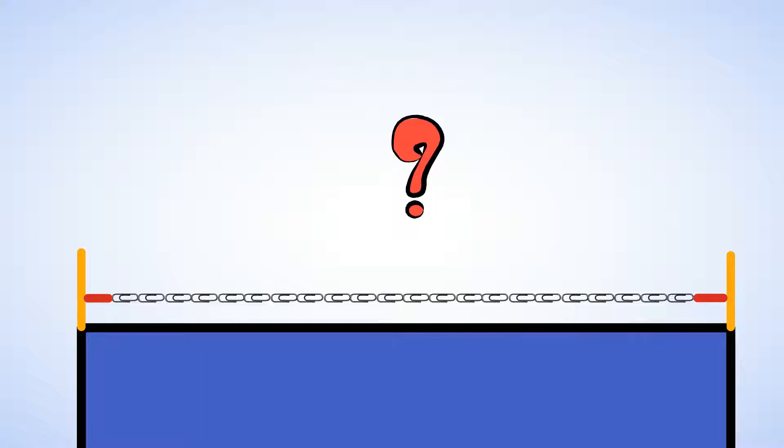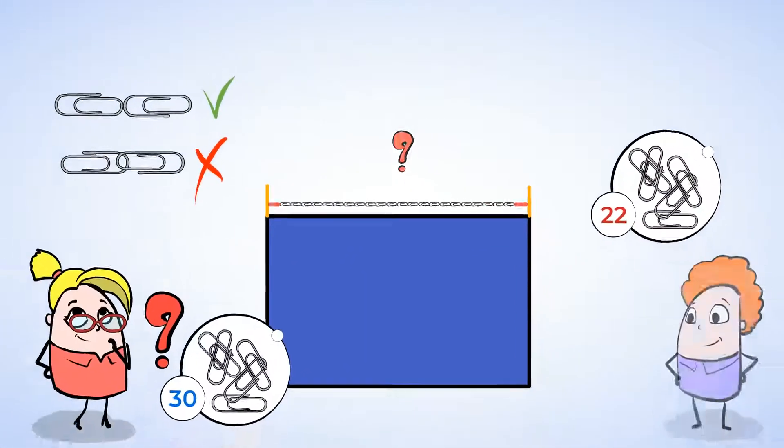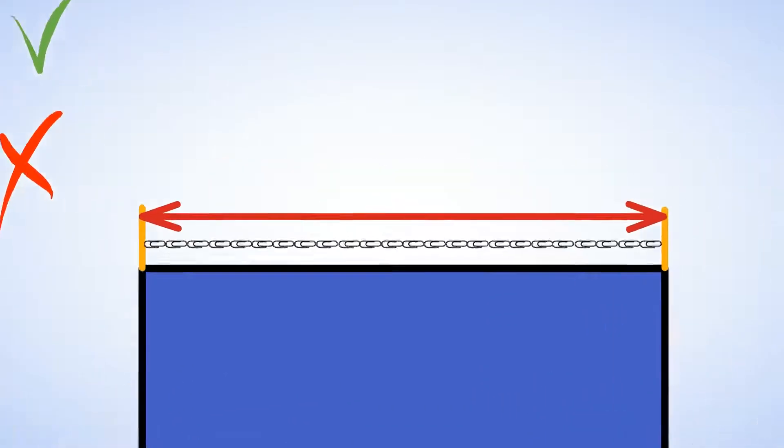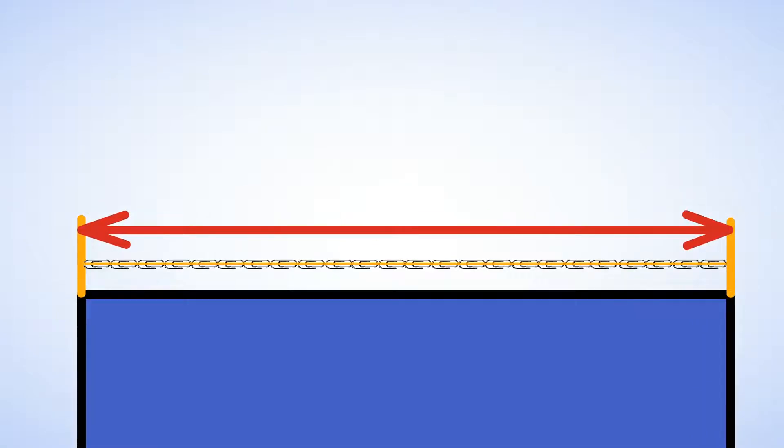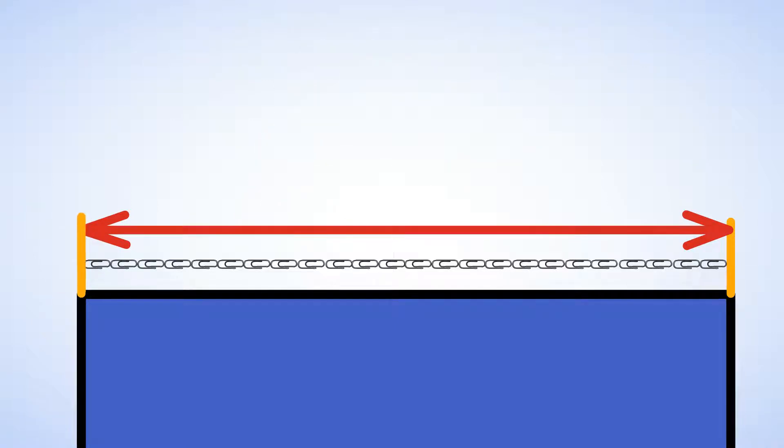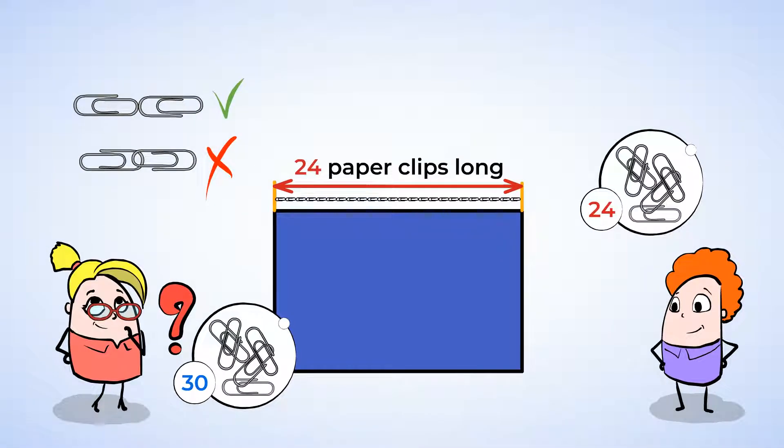Maybe he should try again and remember to measure from edge to edge. All right, let's see. It looks like he got it right this time, and now he says the desk is 24 paper clips long. But let's check his work. Now the paper clips are all in a straight line and they all touch each other without overlapping. The line starts from one edge and stops at the other edge. Looks good, so now we know the desk is 24 paper clips long.